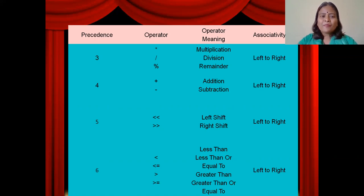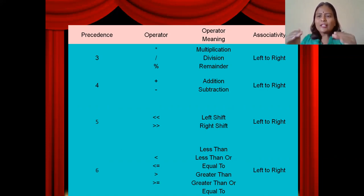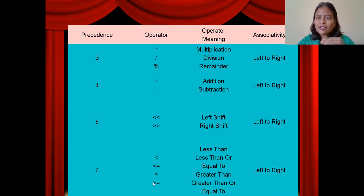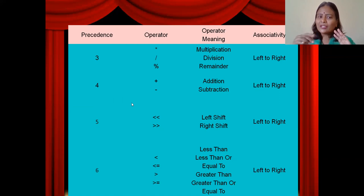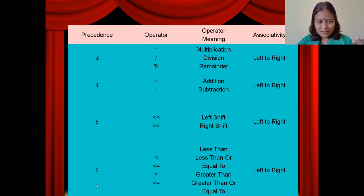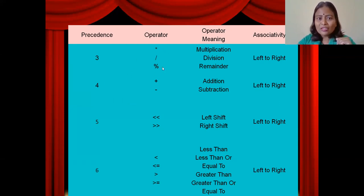When all operators are of the same precedence level, then associativity plays a vital role — left to right or right to left. Similarly, left shift and right shift operators both have the same priority level five. If both occur at a time in the expression, associativity — left to right — helps in the decision. Then the relational operators less than, less than or equal to, greater than, and greater than or equal to all have left-to-right associativity. When mixed precedence operators are in the expression, the operator with the least number (highest precedence) starts evaluating first, and the highest number (least precedence) evaluates last.